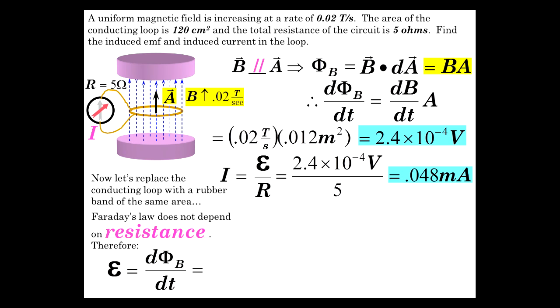So it doesn't depend on the resistance, for instance. The EMF is just dΦ_B/dt, which is 2.4 × 10^-4 volts again. The resistance in this case is infinity. The current is simply 0, but there is an induced EMF in that region.